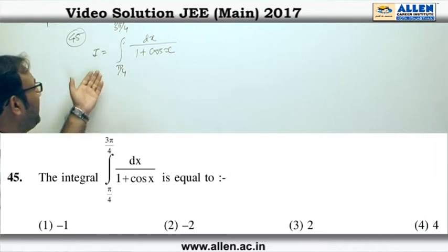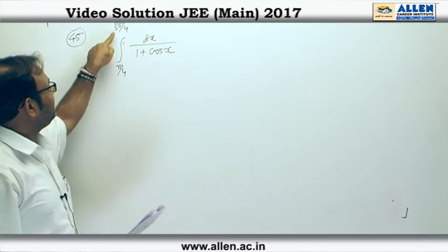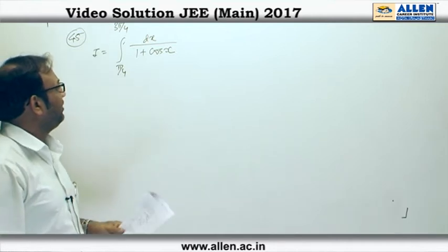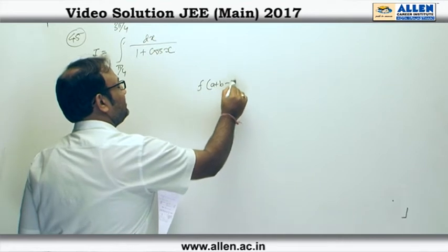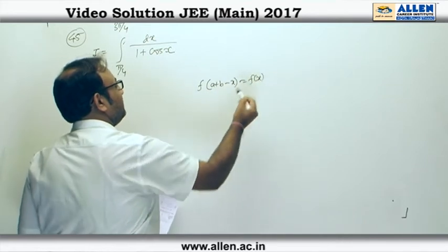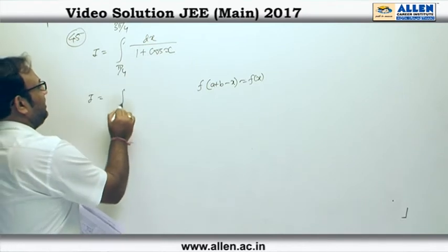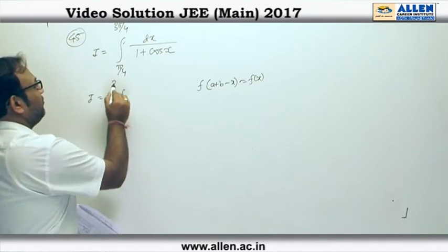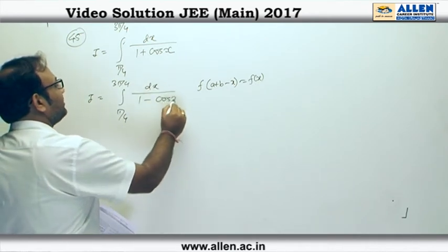In question number 45, we have to evaluate this definite integral. First, as we can see that the sum of the limits is π, we can apply the property f(a+b-x) = f(x). By using that property, the integral becomes π/4 to 3π/4 dx/(1-cos x).